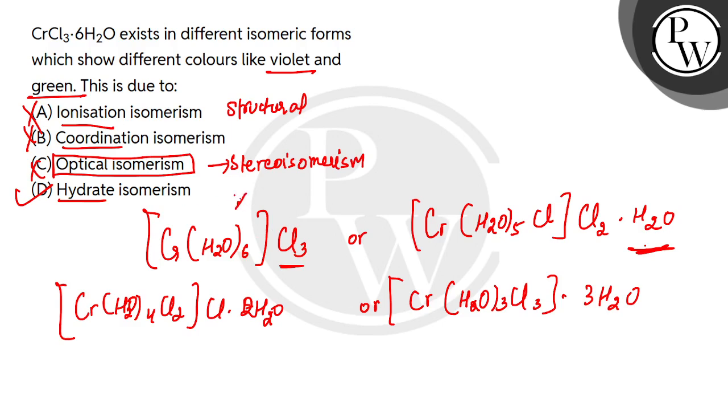If you're talking about optical isomerism, then this is automatically inactive because it will exist in a plane of symmetry. So it will not be optically active. The D option is correct because these hydrates are different.